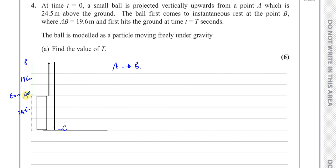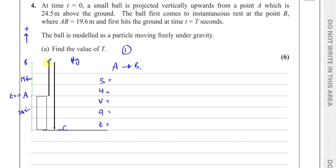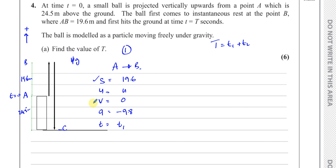From A to B — that's the first portion. We're going to use SUVAT equations because it's under constant acceleration. Taking upward as positive: the displacement s is 19.6 meters, the initial velocity u is unknown, the final velocity v is zero because it reaches instantaneous rest at B, the acceleration a is negative 9.8 m/s², and the time is t1. Our total time T will be t1 plus t2, where t2 is the time from B to C.